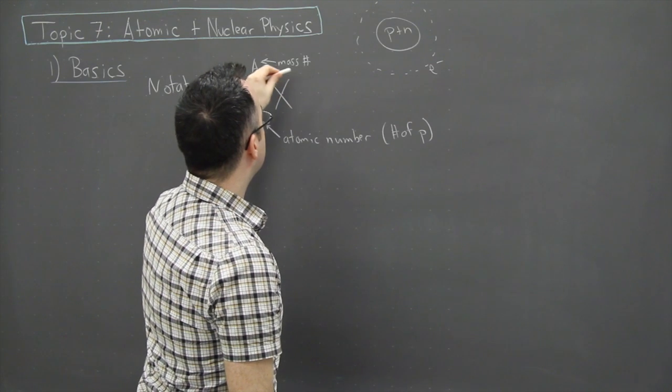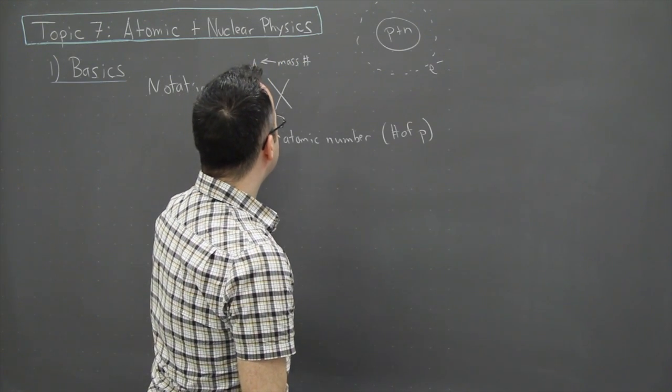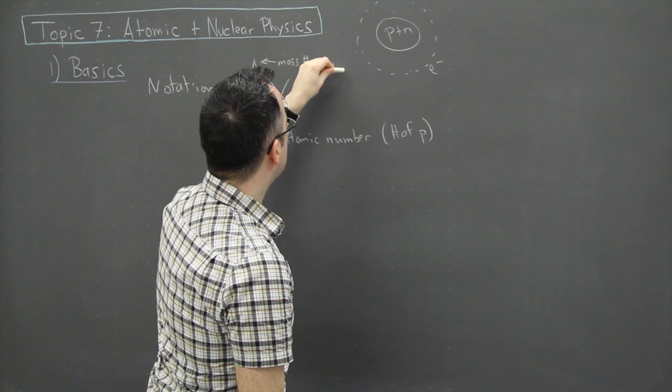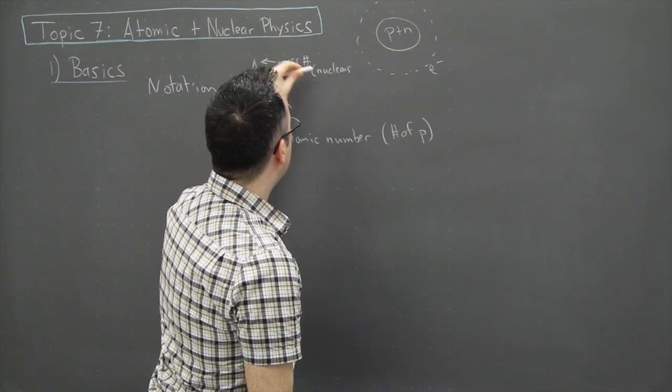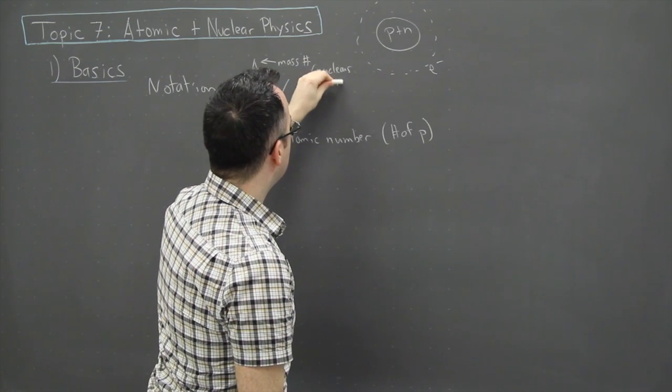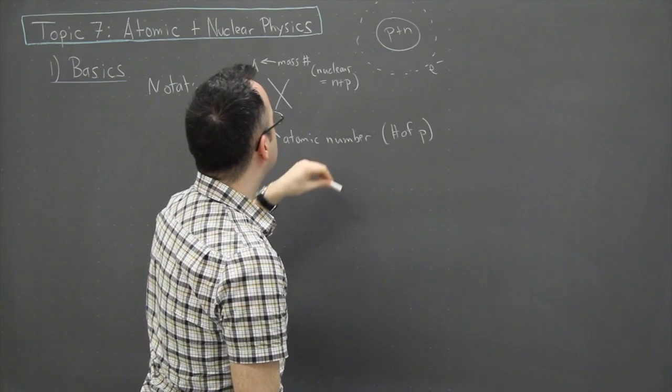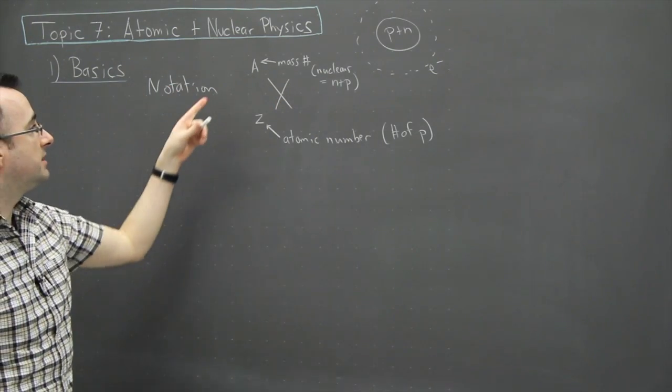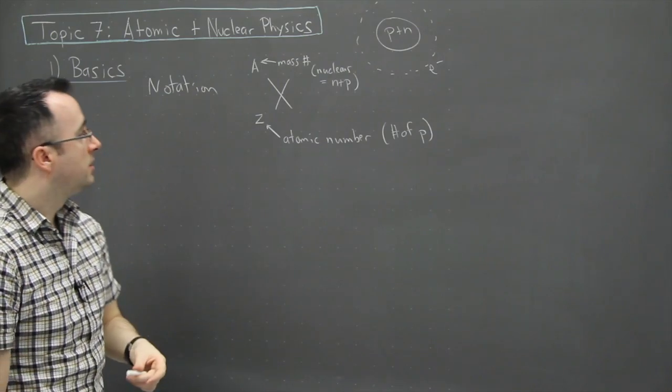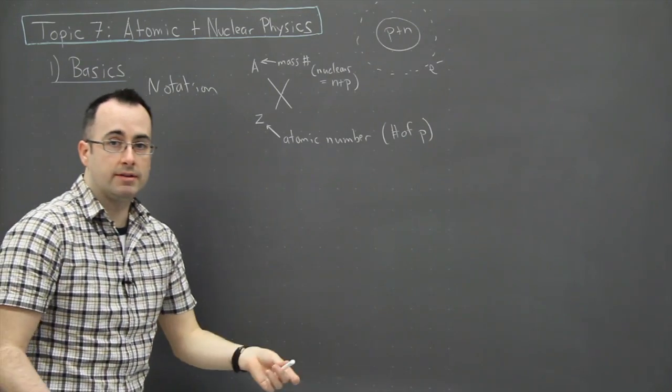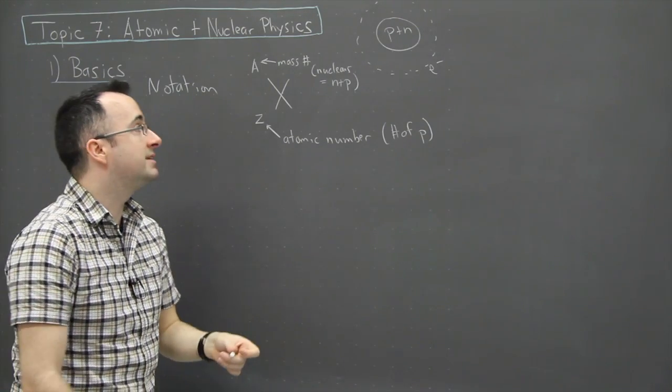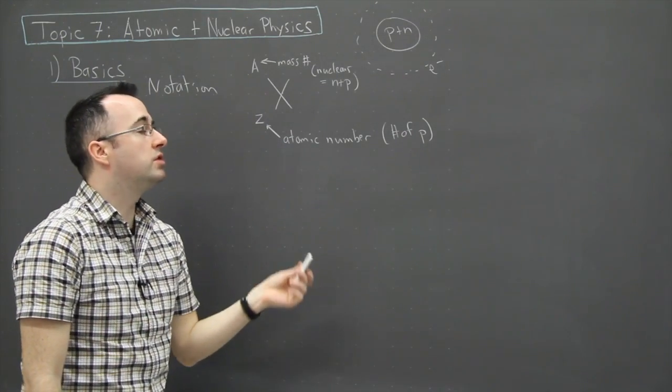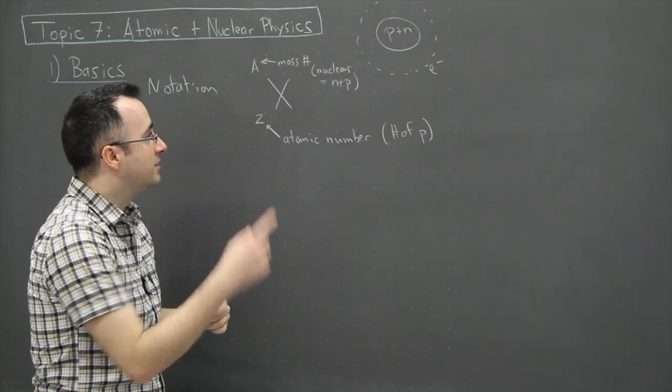Well the mass number, that tells you that's the number of nucleons. And nucleons are neutrons plus protons. So that's what's going on here, is that the A number, that's the mass number, and that tells you the number of nucleons—in other words, the number of particles in the nucleus. And since the nucleus is made up of both protons and neutrons and it contains those.